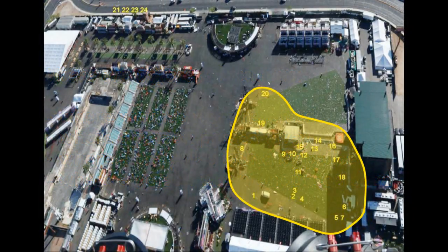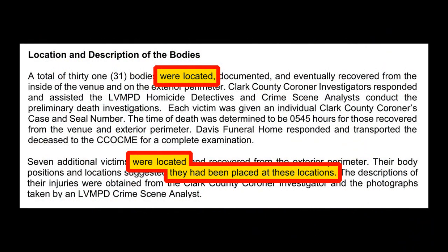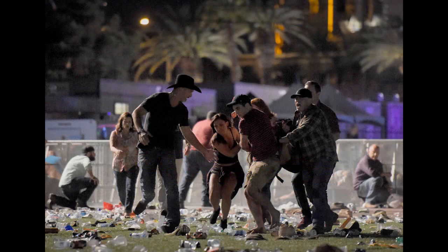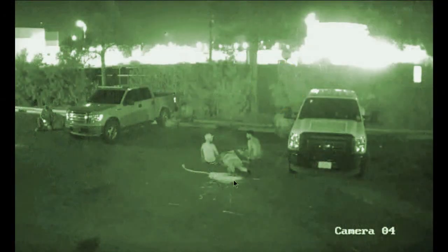Just because 20 deceased people were left on the ground near the stage doesn't mean that other people received wounds elsewhere. The LVMPD report makes clear that it only shows locations where bodies were found by cops, and that the bodies had been placed there by others. We know for sure that wounded people, possibly fatally, were carried out of the area in front of the stage. The only person known to be fatally wounded outside of the venue was Melissa Ramirez, known from the CCTV video.